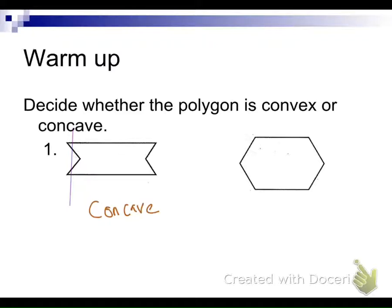Okay, so somebody else. Can you raise your hand and tell me about the second one? Mario? Convex. It's convex. How do you know? It only hits twice. So no matter how I draw the line, it's only going to hit twice. So we know it's convex.